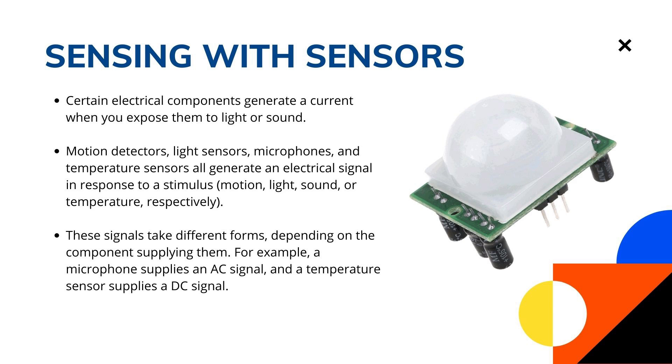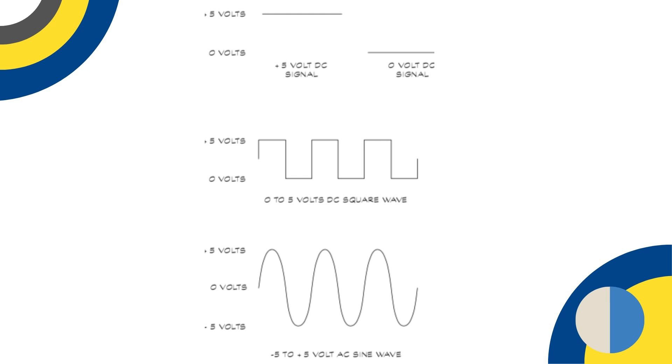These signals come in different forms — they might be DC or AC, which are two types of signals. A microphone gives off an AC signal. Here is a diagram that shows a few signals you run into often when working with electronics.